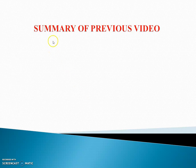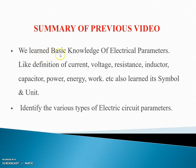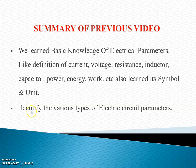First of all, we discuss summary of previous video. We learned basic knowledge of electrical parameters like definitions of current, voltage, resistance, inductor, capacitor, power, energy and work etc. We also learned its symbol and unit. Second, we identified the various types of electric circuit parameters — we studied definitions, symbols, unit and formulae.